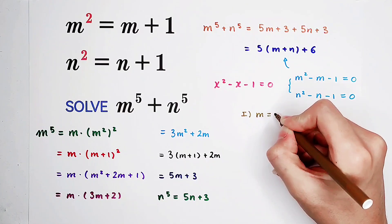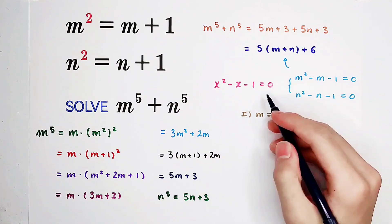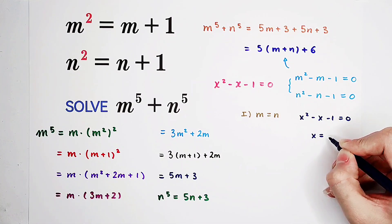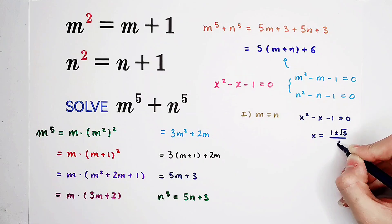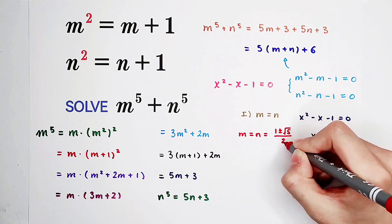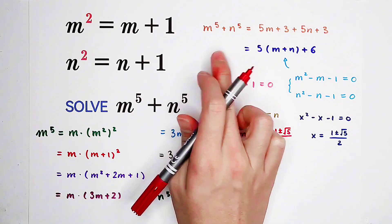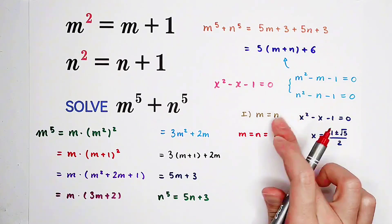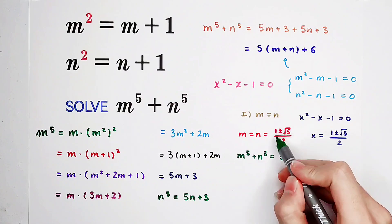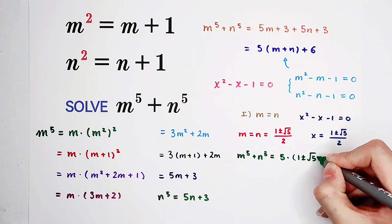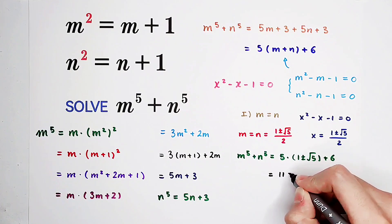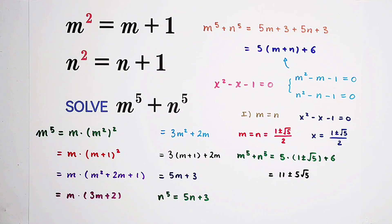The first case is if m is equal to n. And when m equals n, we know that the roots to this equation are 1 plus or minus square root of 5 over 2. So in this case, m equals n both equal to 1 plus or minus square root of 5 over 2. In this case, just substitute it here. So m to the power of 5 plus n to the power of 5 is equal to 5 times this times 2, 1 plus or minus square root of 5, then plus 6. And you can see that the result is very pretty. It is 11 plus or minus 5 times square root of 5.